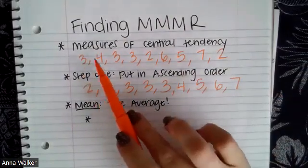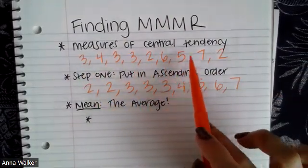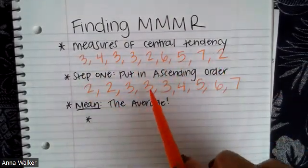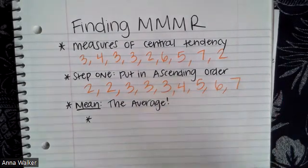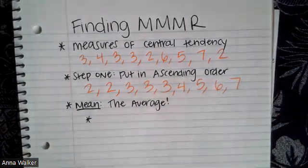One way I can double check is by counting. I have nine values, and counting the original list confirms nine values.